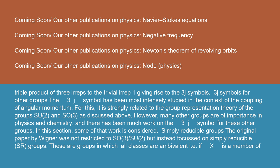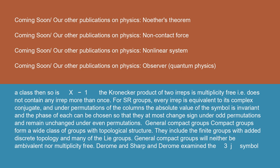Simply reducible groups: the original paper by Wigner was not restricted to SO(3)/SU(2), but instead focused on simply reducible (SR) groups. These are groups in which all classes are ambivalent, i.e., if X is a member of a class then so is X^(-1), and the Kronecker product of two irreps is multiplicity-free, i.e., does not contain any irrep more than once. For SR groups, every irrep is equivalent to its complex conjugate, and under permutations of the columns the absolute value of the symbol is invariant, and the phase of each can be chosen so that they at most change sign under odd permutations and remain unchanged under even permutations.